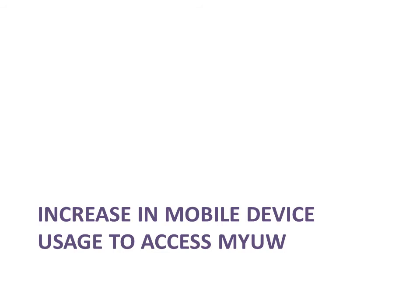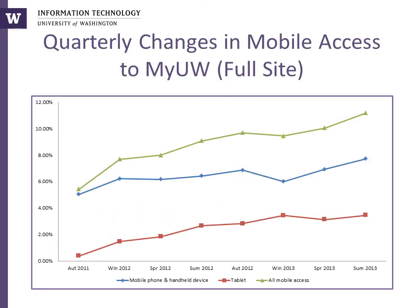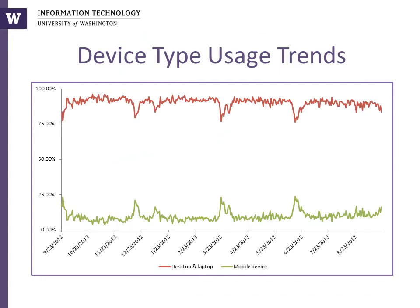A significant trend is the increase in students using mobile devices to access MyUW. All mobile access increased to 11% of all MyUW visits in the summer quarter of 2013. Interestingly, the use of tablets to access MyUW has increased significantly from less than 0.5% in Autumn 2011 to nearly 3.5% in summer 2013. At the beginnings and ends of quarters, a greater proportion of visits to MyUW are conducted from a mobile device, with a corresponding drop observed in access from a desktop computer or laptop.